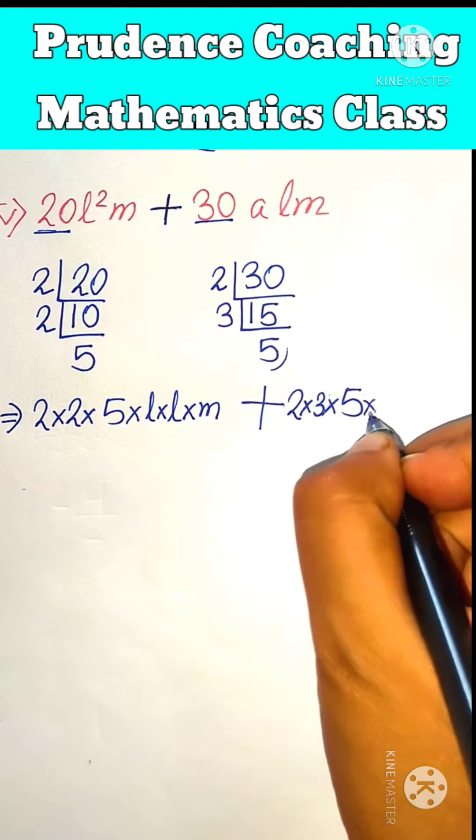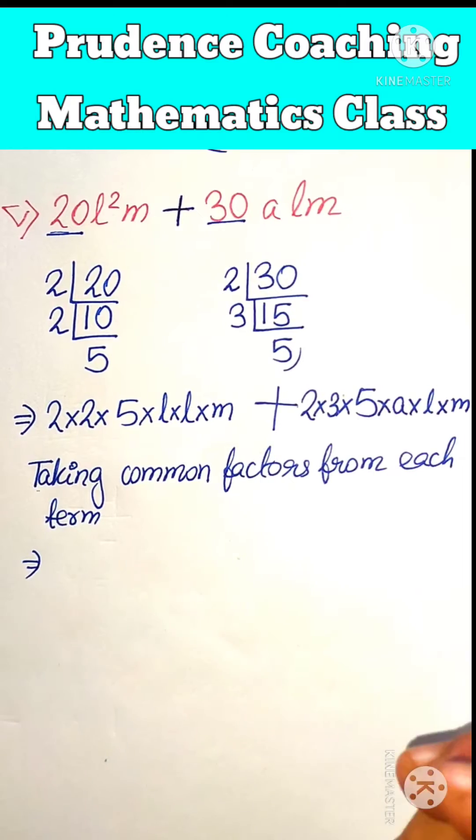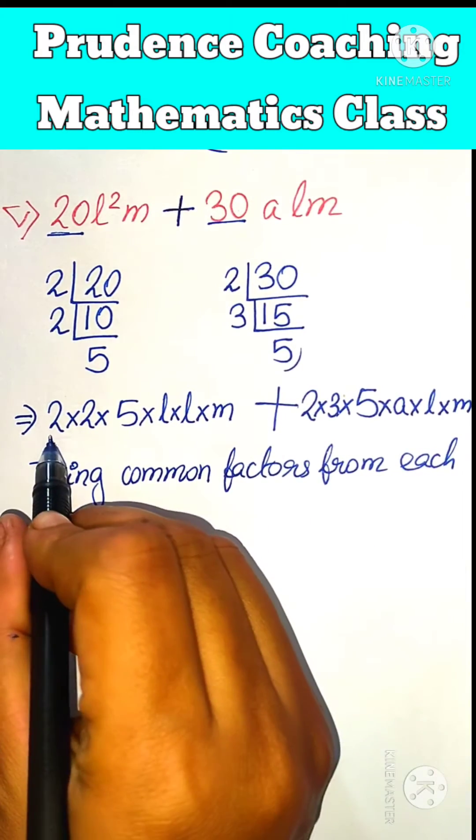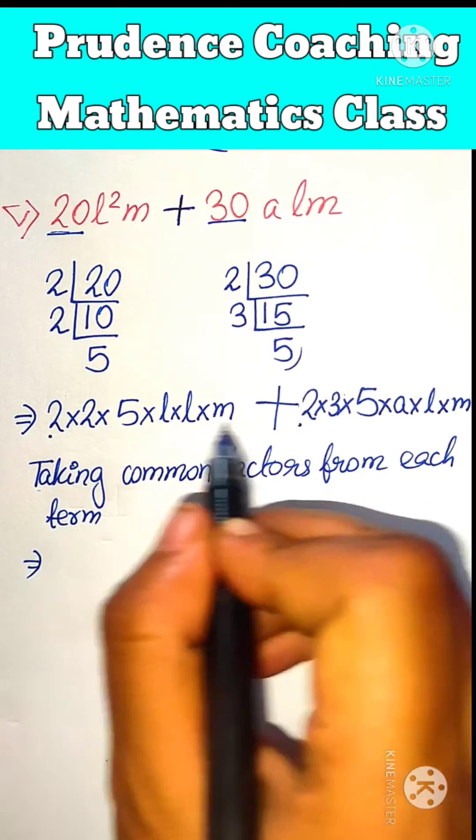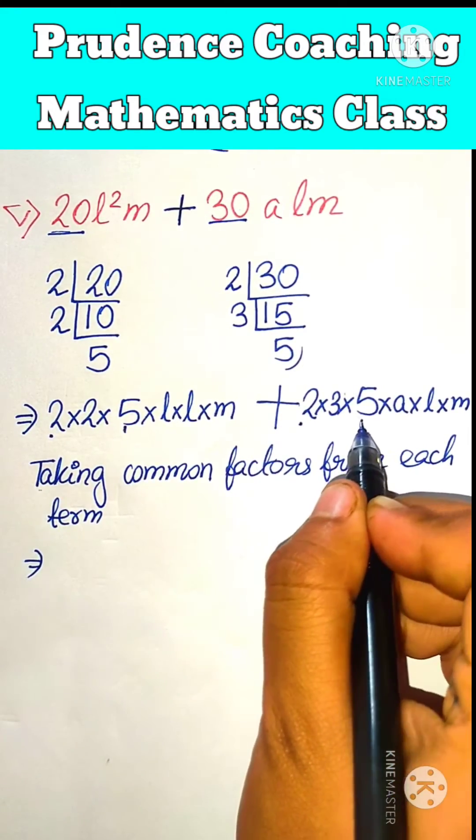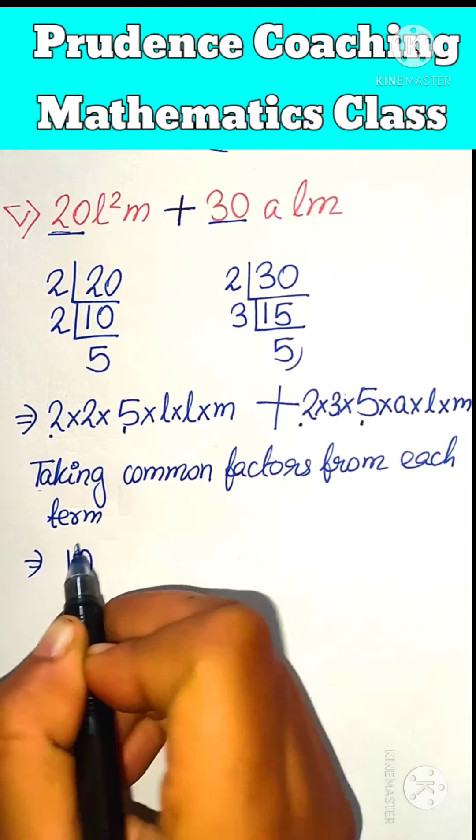Now taking common factors from each term. Here we have 2, here also 2. Here we have 2, we don't have any more. Here we have 5, here we have 5, here we have 5. So in the constant, we will get 2 times 5, that is 10 common.